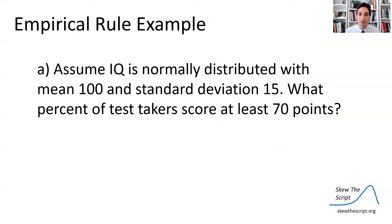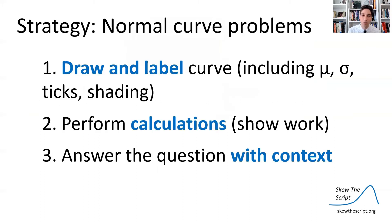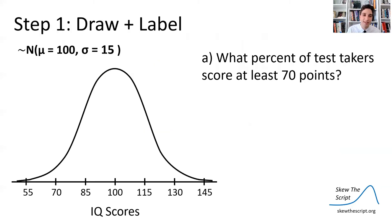Let's talk through an example of how you might use the empirical rule to come up with proportions from a normal curve. Assume IQ is normally distributed with a mean of 100 and a standard deviation of 15 points. What percent of test takers score at least 70 points? A strategy you should use for normal curve problems is to: one, draw and label — that's probably the most essential thing. Draw it out, label it, include the mean, standard deviation, tick marks, and shading to conceptualize what's happening in the problem. Then perform your calculations while showing work, and answer the question with context. AP graders are going to be looking for all these things.